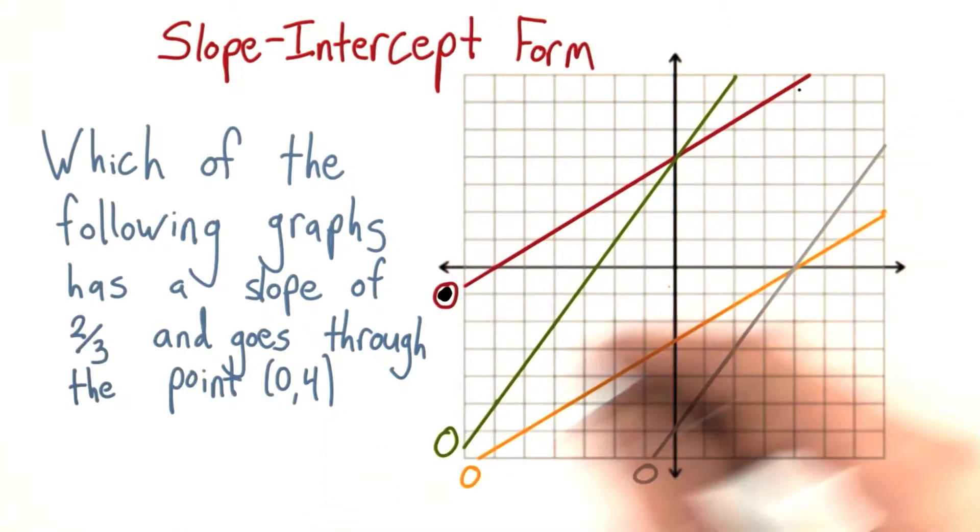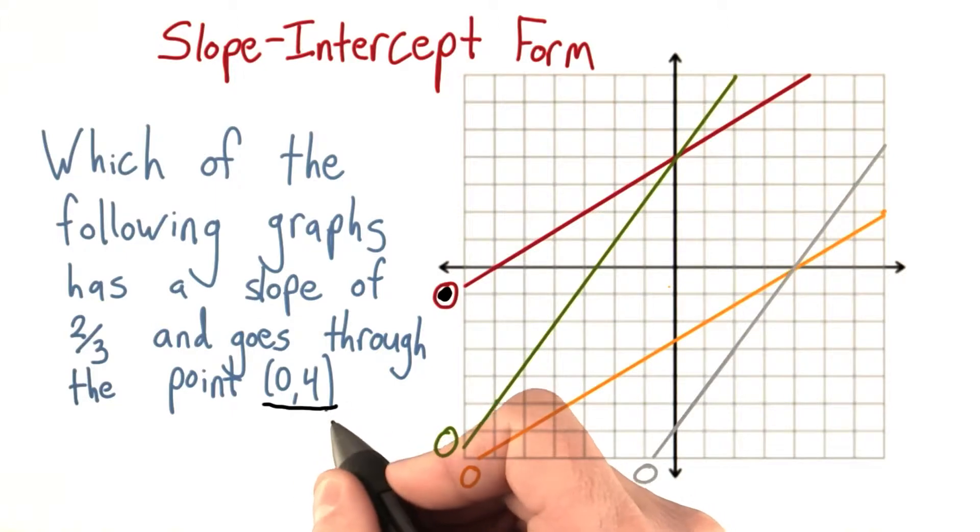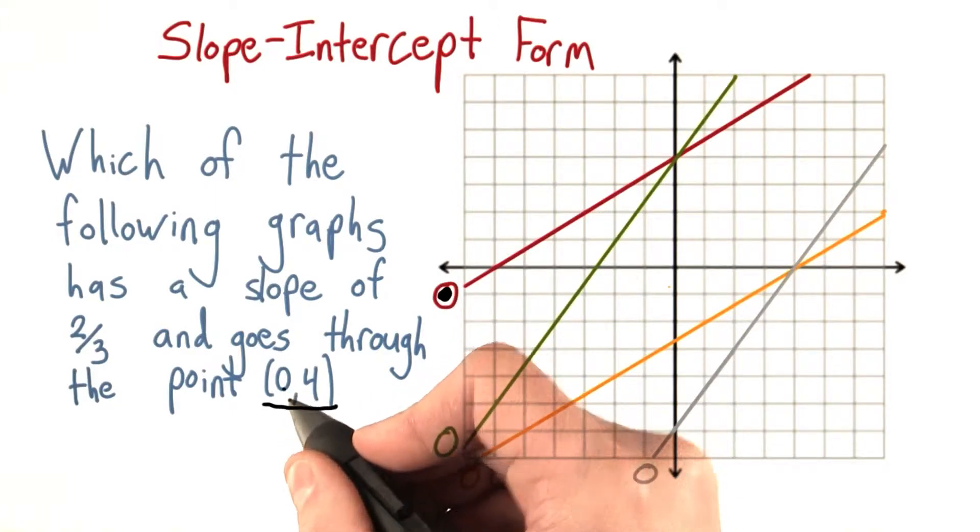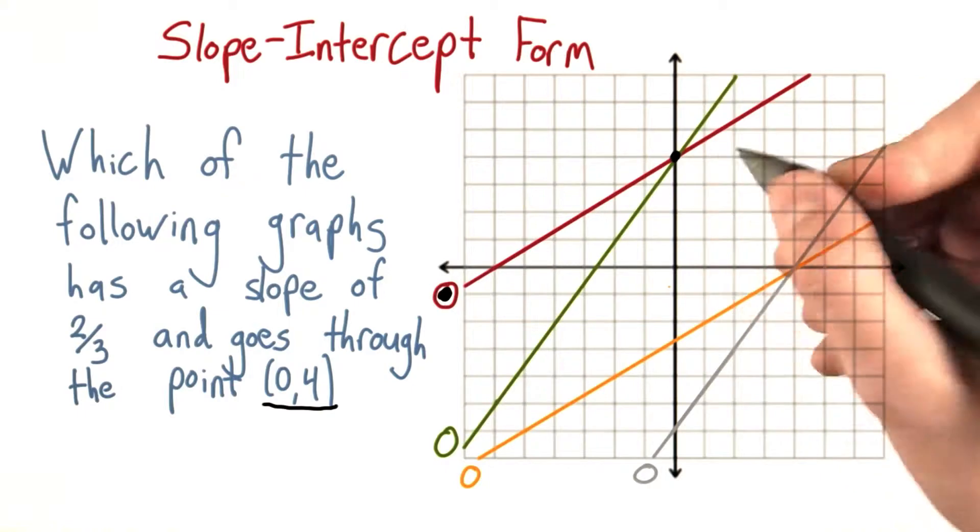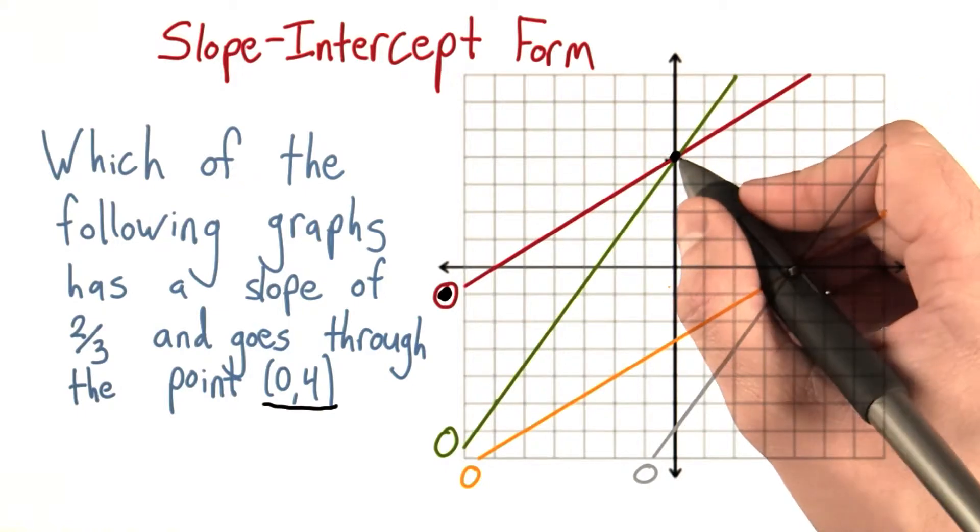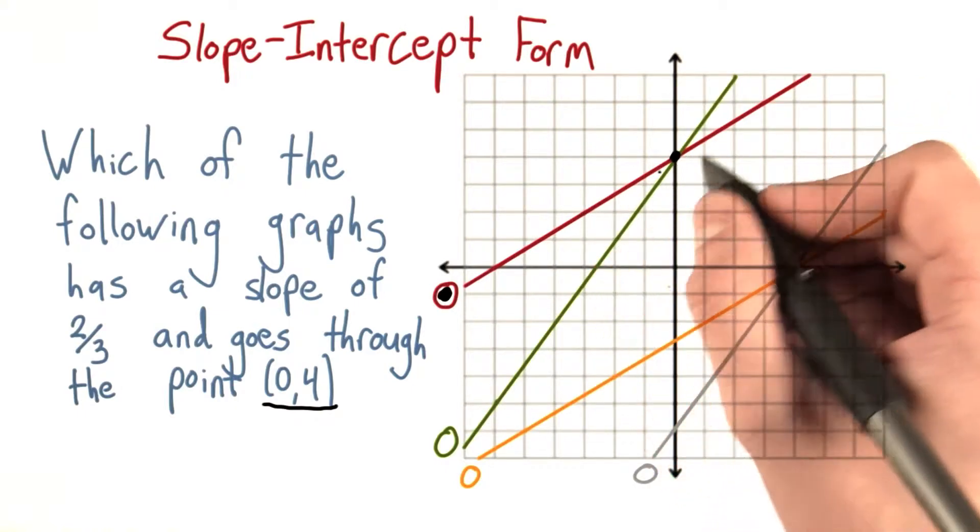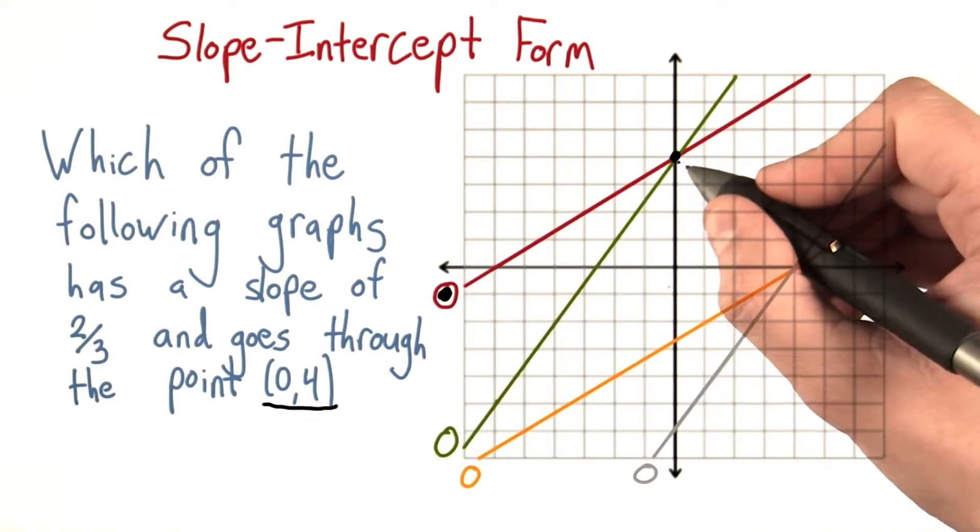And notice something interesting here. This point, (0, 4). Well, since the first value was 0, this point was right on the y-axis, which makes this point of intersection here of the graph with the axis a y-intercept.